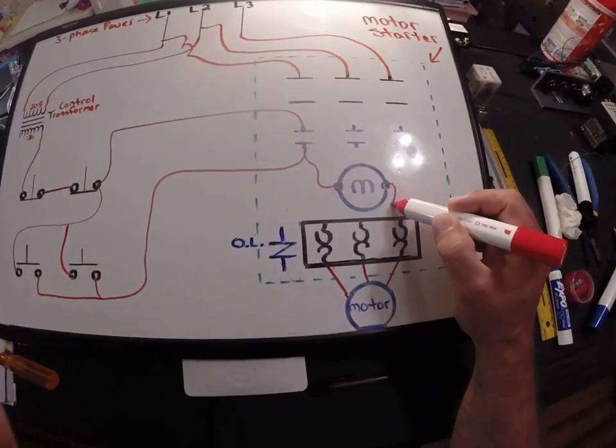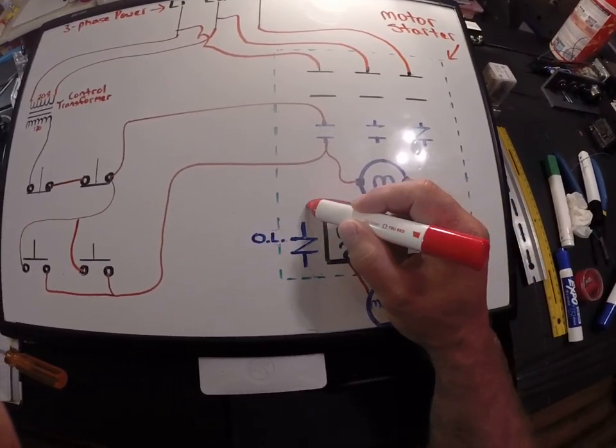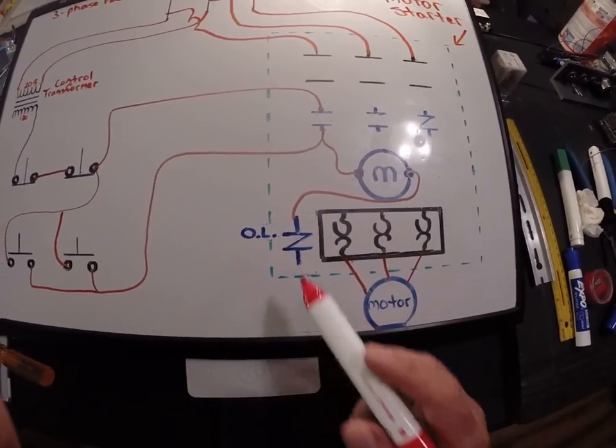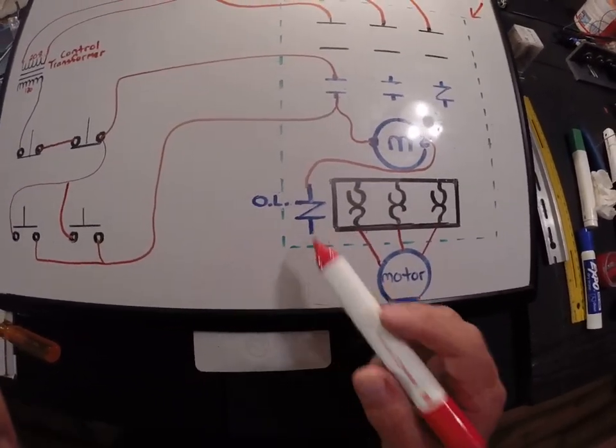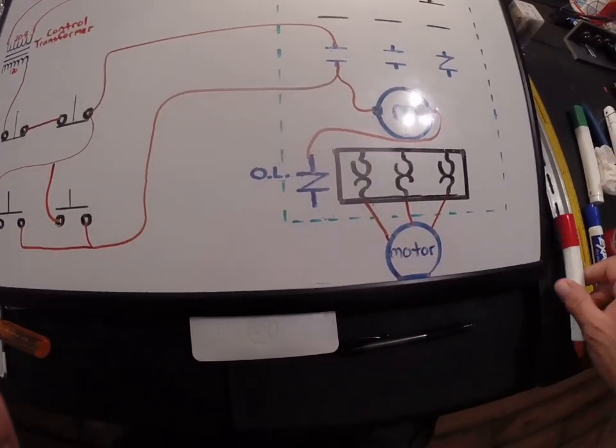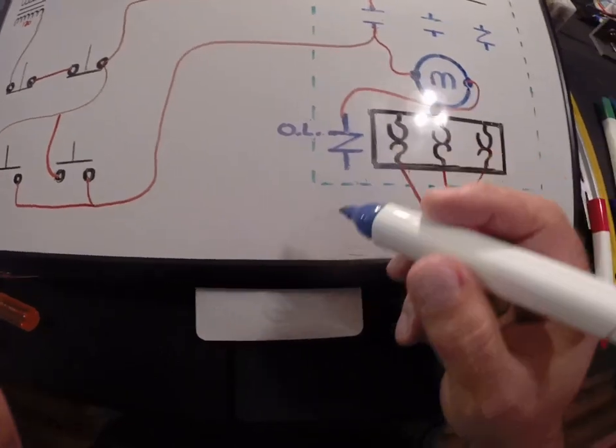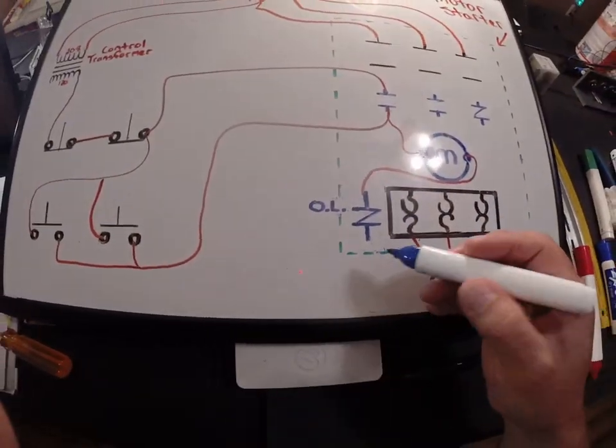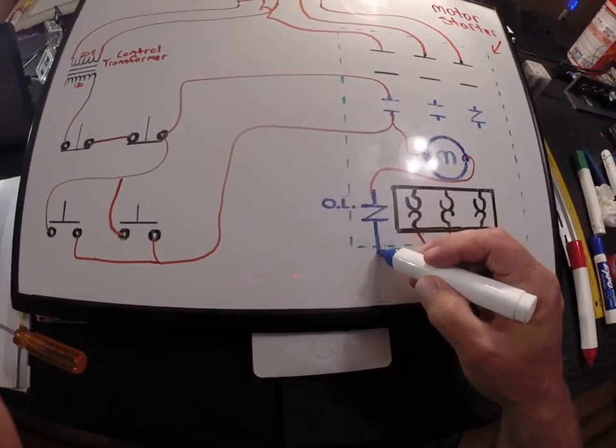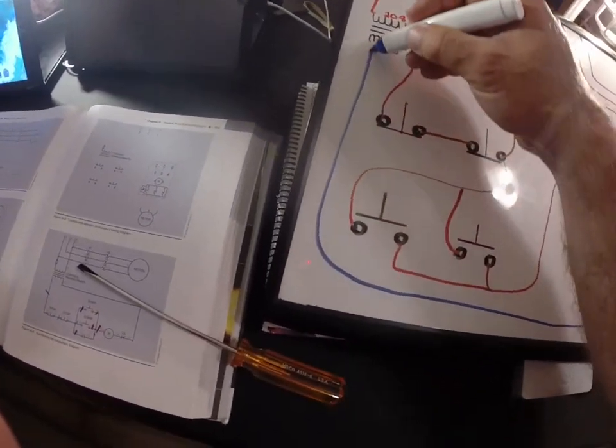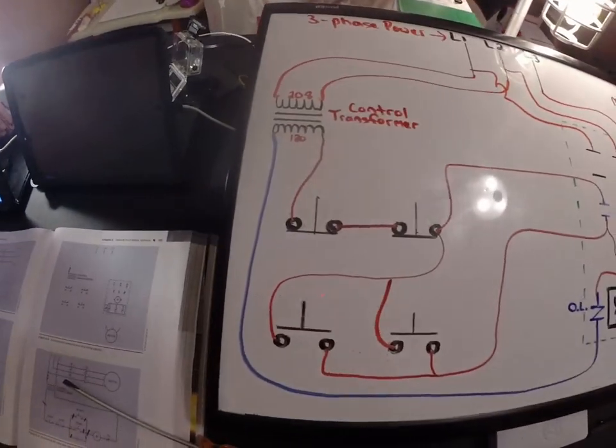You might remember the NEMA mag starter actually had a wire from the factory that already came off to the overload. Here's our overload normally close contact. Now what I'm going to do is I'm going to go home in neutral from my overload back to my source. We're going to draw this around, that's that. So now that control circuit is done.